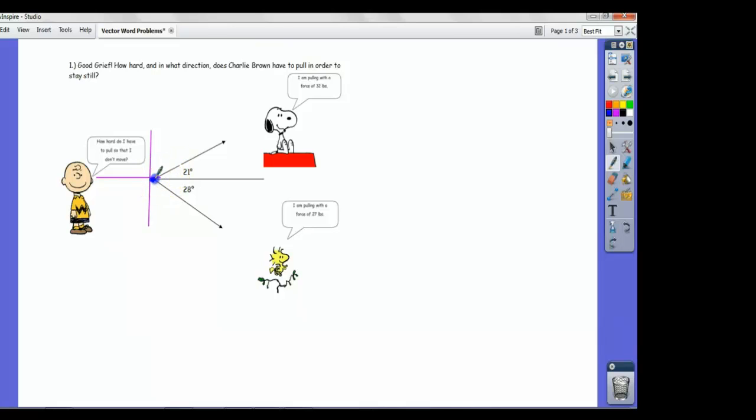Charlie Brown's pulling on a rope and the rope divides right at this instance into two ropes. Snoopy's got one over here and Woodstock's got one over here. If Snoopy's pulling at 32 pounds in this direction and Woodstock's pulling at 27 pounds in this direction, how hard does Charlie have to pull so that the object just stands still? Because if one side's pulling harder than the other it's going to move.